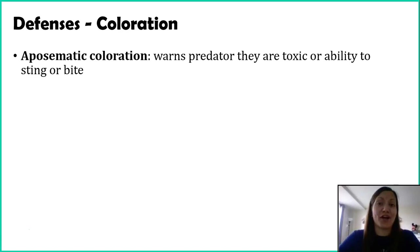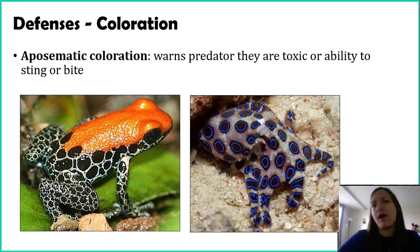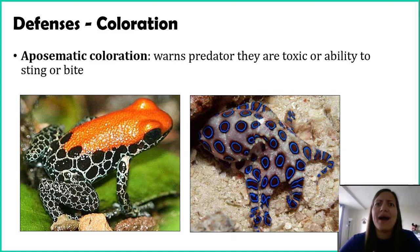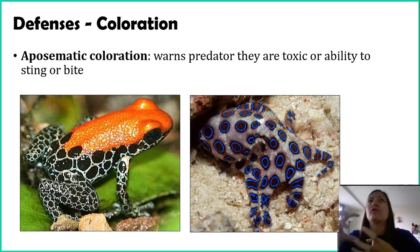Let's start with aposematic coloration. These are the brightly, crazily colored organisms — the poison dart frog, those neon green frogs, and here is a blue-ringed octopus. These bright colors are warning colors, indicating to predators that they're dangerous. They're either toxic — most of them are poisonous if you eat them — or they have some sort of sting, bite, or warning signal.